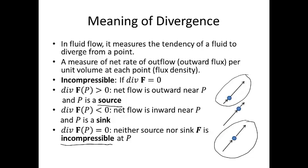If the divergence of f at a point p is less than zero, net flow is inward near p, and p is called a sink. So the vectors going in are bigger than the vectors going out.